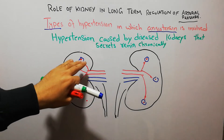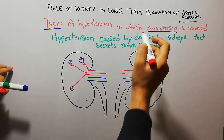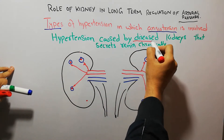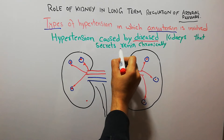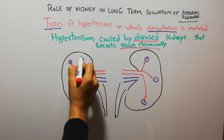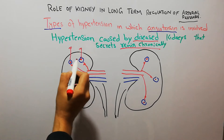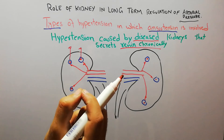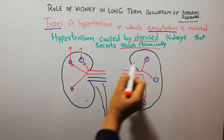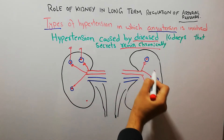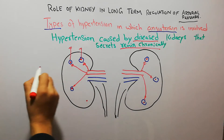The parts of the kidney that are diseased will secrete renin chronically. These diseased parts, whose blood supply has been compromised due to constriction of the supplying blood vessels, will continuously secrete renin.